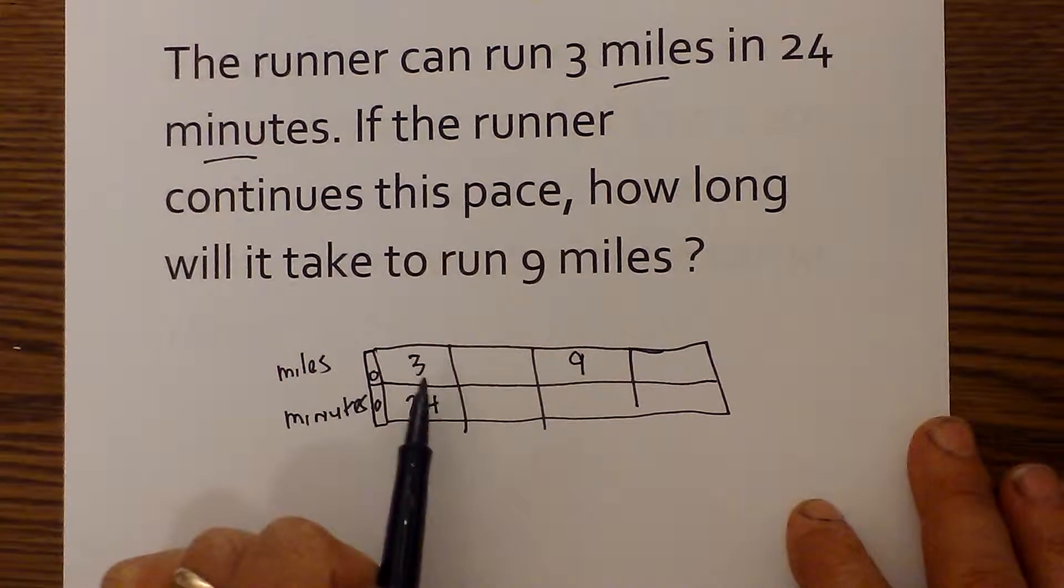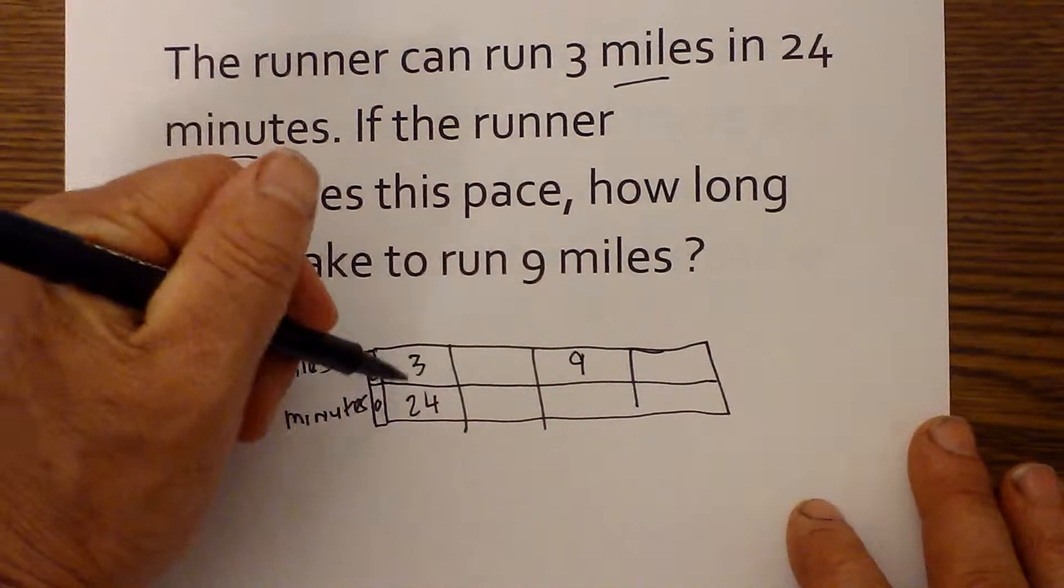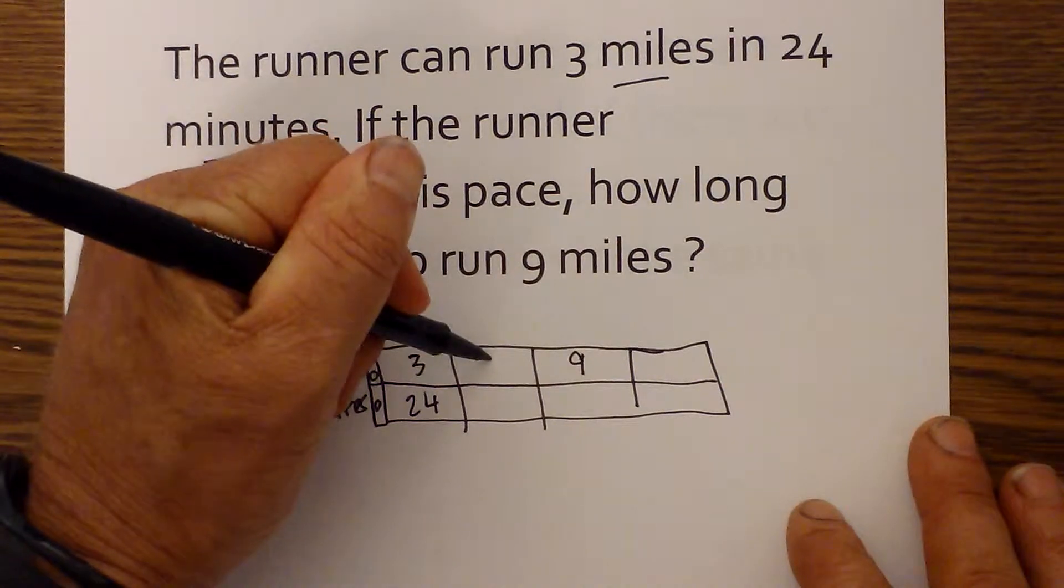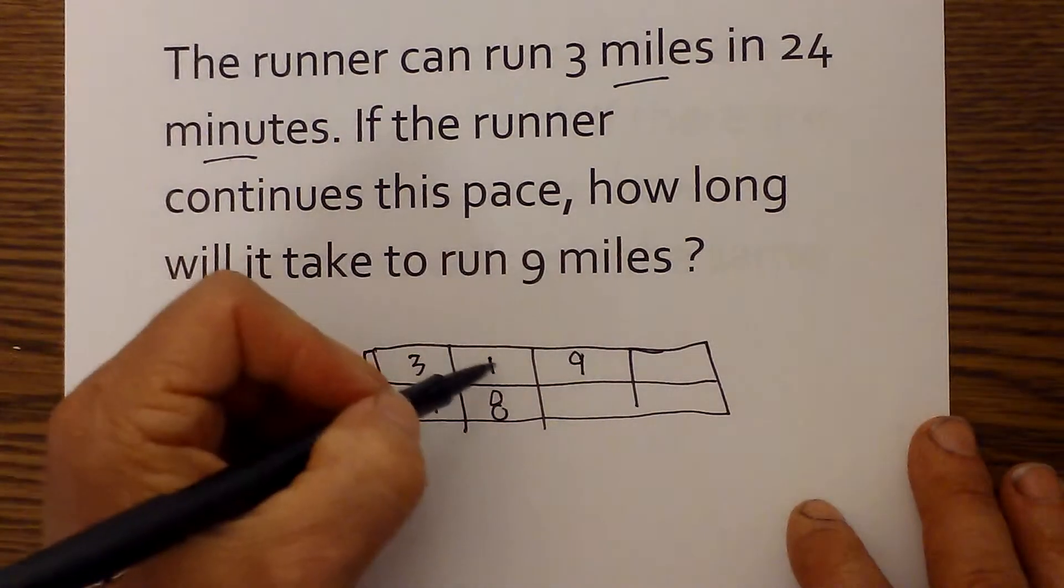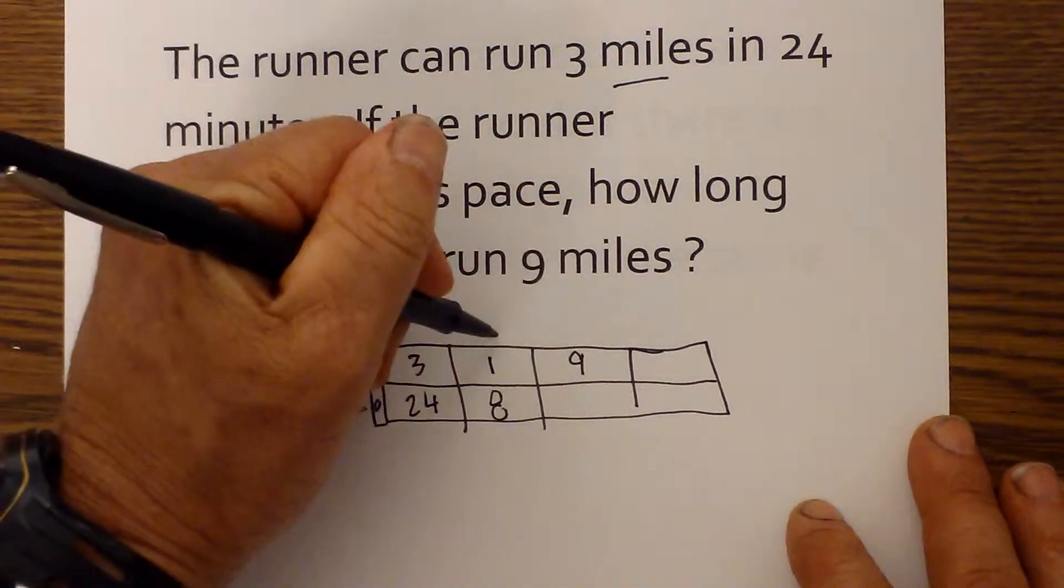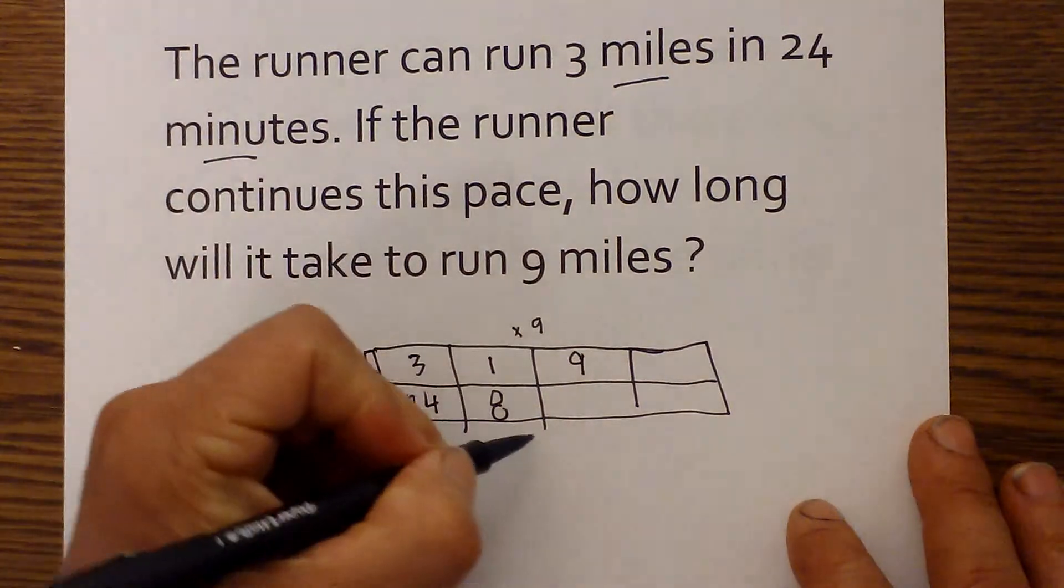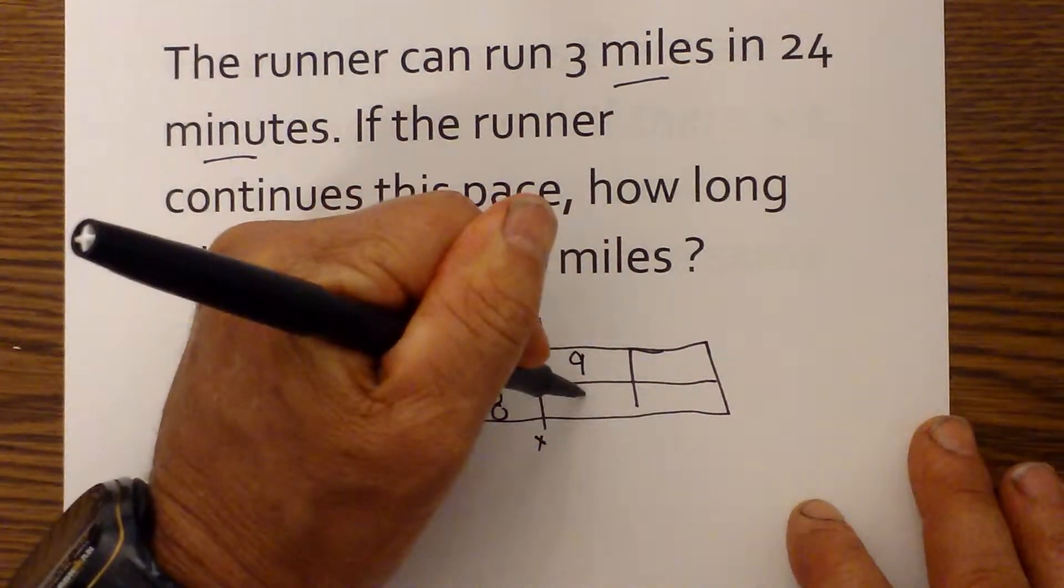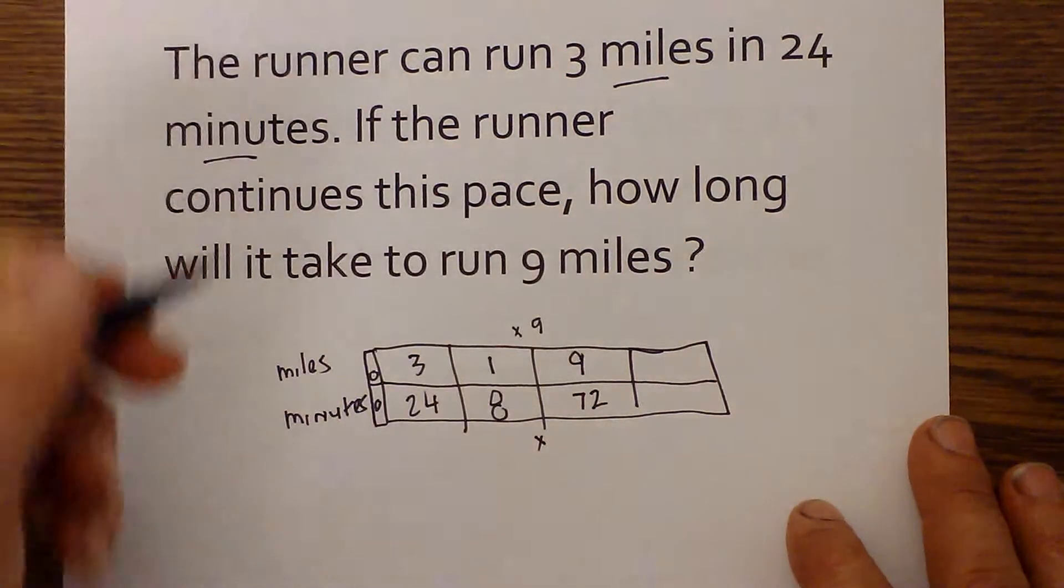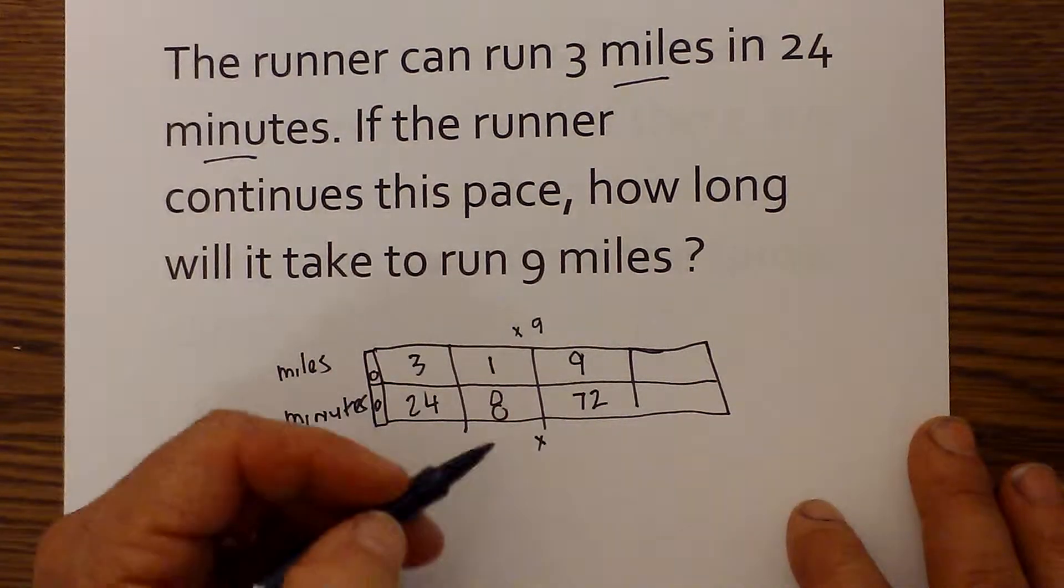Now, what I need to do is I need to simplify this. And so 3 will go into 24 eight times. So I'm going to simplify this to 1, 8. I then, 1 will go into 9 nine times. So I'm going to multiply 1 times 9. And what you do to the bottom, you must do to the top. And 8 times 9 is 72.